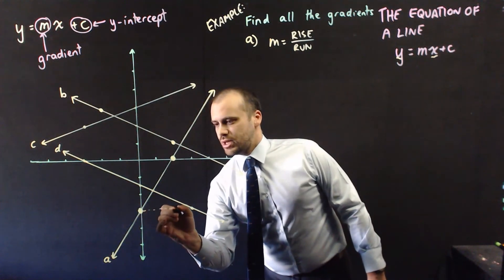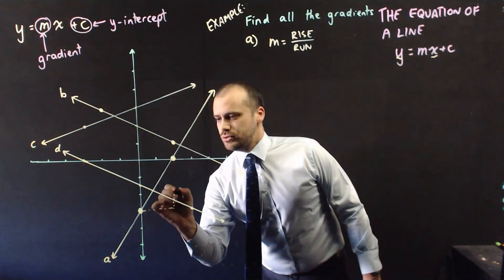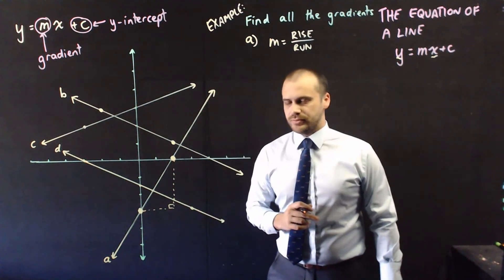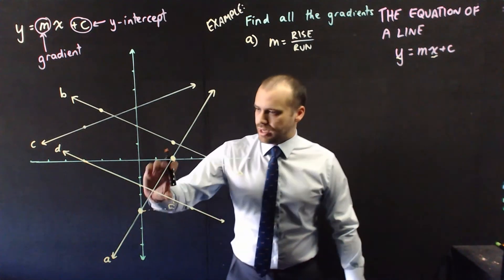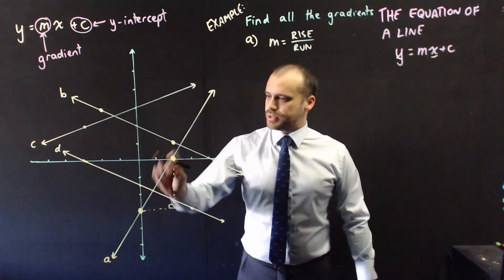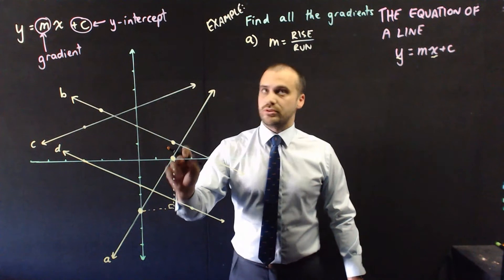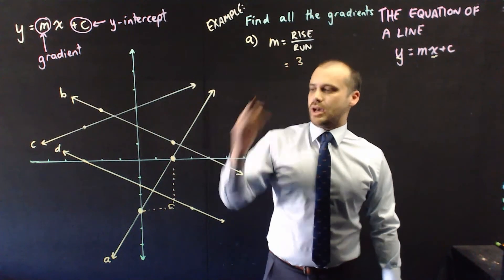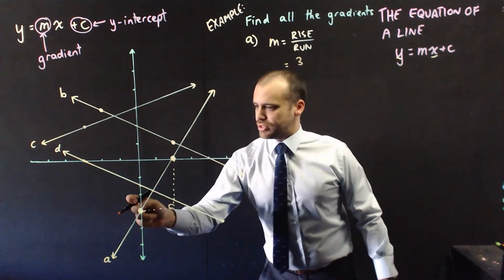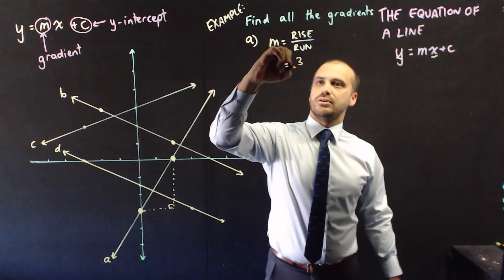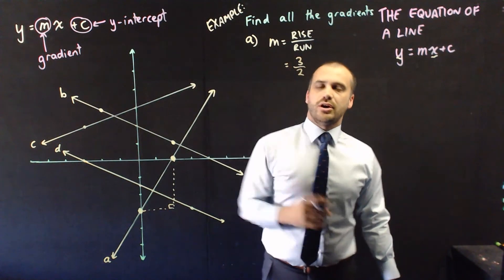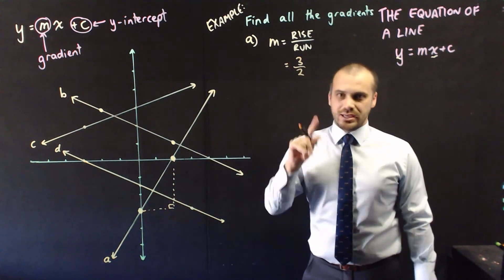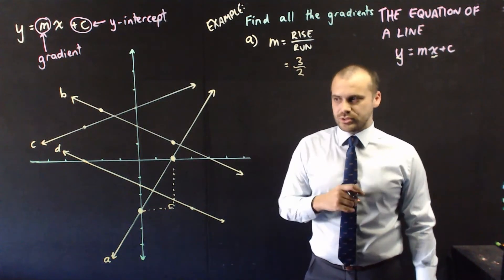Across and then up — makes a nice little right angle triangle. How far up did it go? 1, 2, 3. How far across did it go? 1, 2. That's 3 over 2. The gradient of A is 3 over 2.